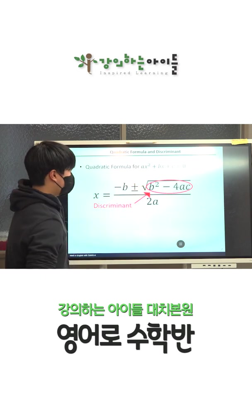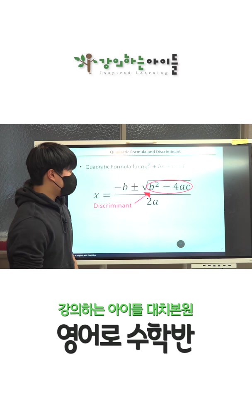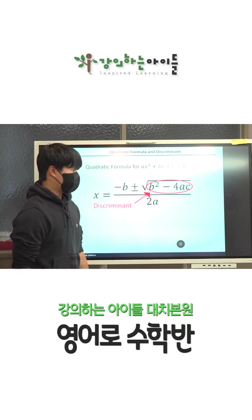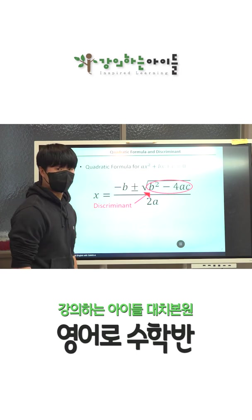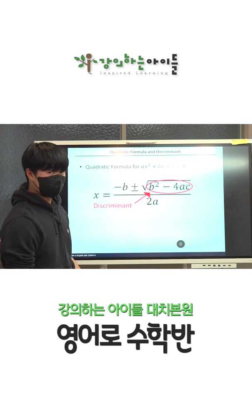Depending on the sign of the discriminant, we have three types of roots. Specifically, each of a positive and a negative discriminant indicates the two distinct real and imaginary roots respectively.